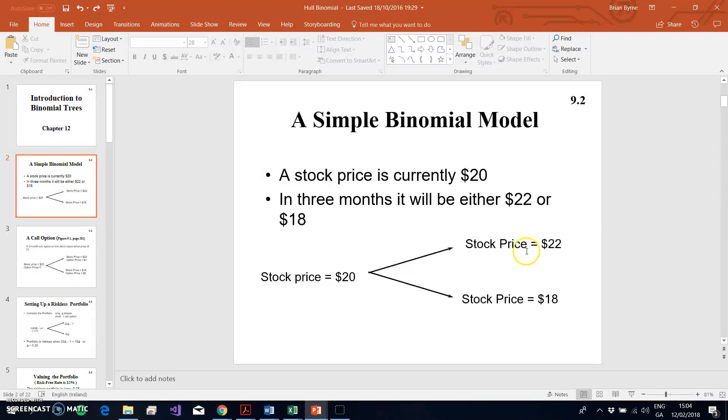Strictly speaking, that movement is not quite consistent with Cox, Ross, Rubenstein because here we have a 10% increase or a 10% reduction. In reality, what Cox, Ross, Rubenstein proposed was that u and d would be of this order of magnitude.